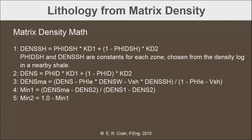Once we have a matrix density, we can partition that density into the volume of two minerals. For example, in a dolomitic sand, mineral number one might be quartz and mineral number two would be dolomite. So density one in the equation would be the density of quartz, and density two would be the density of dolomite. The calculation gives you the volume of each mineral as a decimal fraction — you might end up with 0.6 for mineral one and 0.4 for mineral two, giving you a 60-40 mixture of quartz and dolomite.